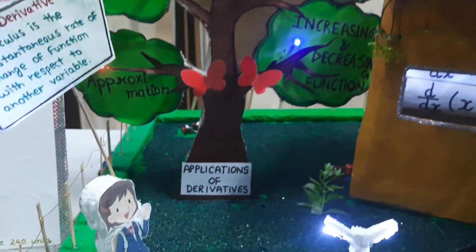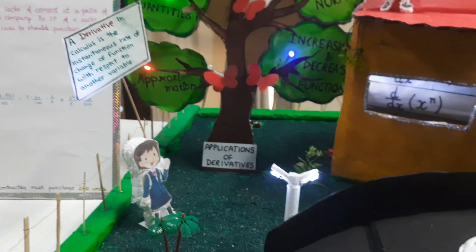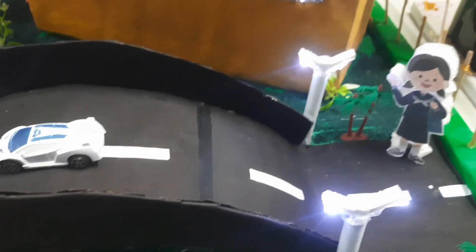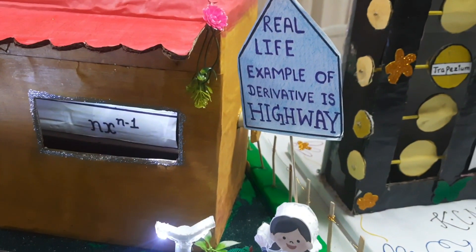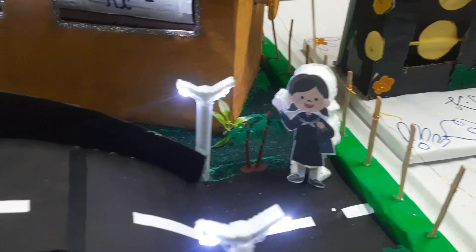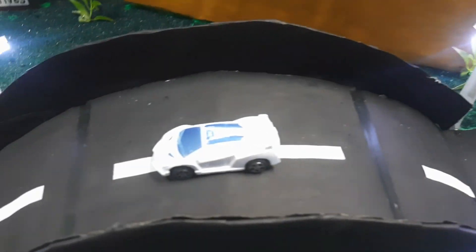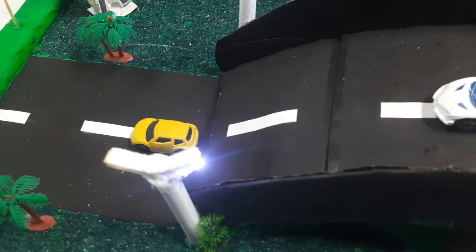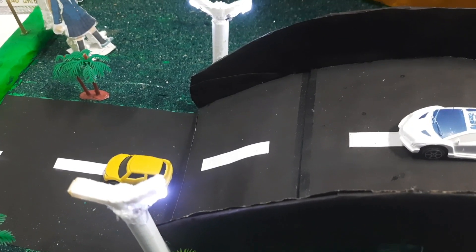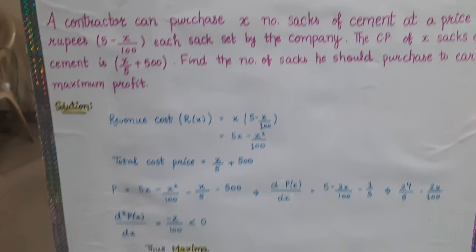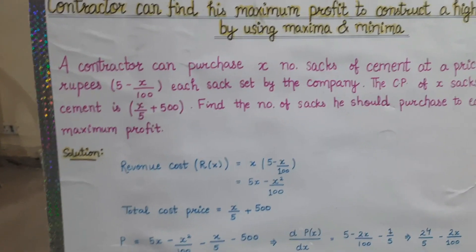Now come to the real life example. For example, if I take this highway — this is a real life example of a derivative. For the construction of this highway, the contractor can find the maximum profit by using derivatives.